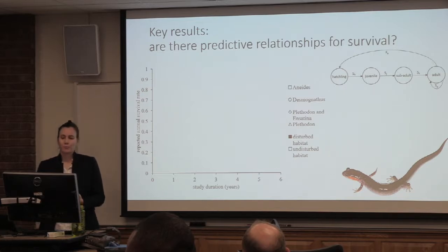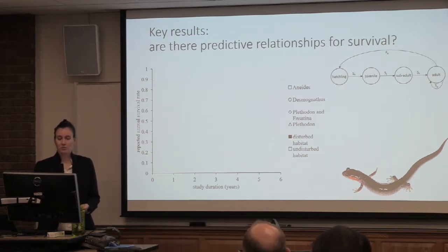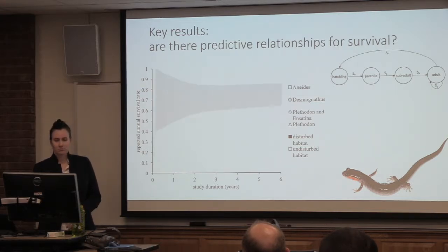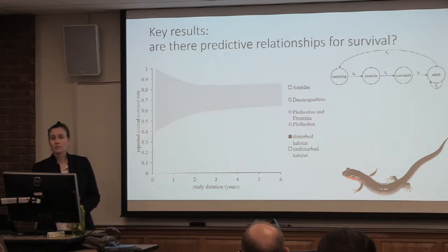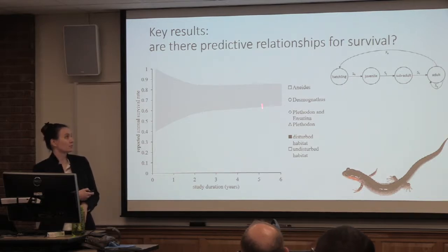So are there other predictive relationships for survival? We wondered if maybe the duration of the study has something to do with how survival is estimated. We might expect that when you've only done a short-term study and your sample size is small, there's a lot of variation — a wider spread of values among short-duration studies. Whereas when you get out to longer-duration studies, maybe there's some convergence among estimates. That's why we plotted study duration against the reported annual survival rate.